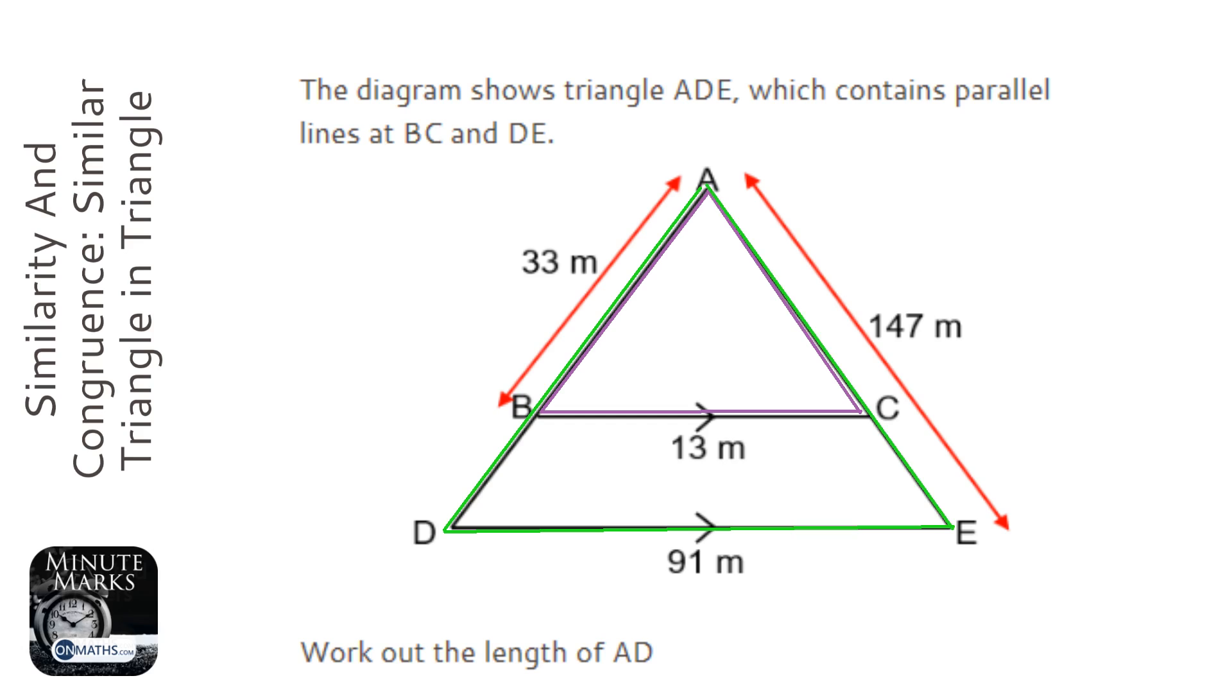These two triangles are mathematically similar, and the reason we know that is because these are parallel lines. This angle here and this angle here will be equal. They are F angles, which are corresponding angles, and these two are also corresponding angles. This top one here is a shared angle between the two triangles.